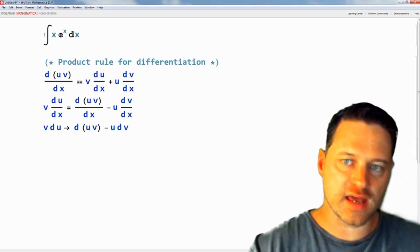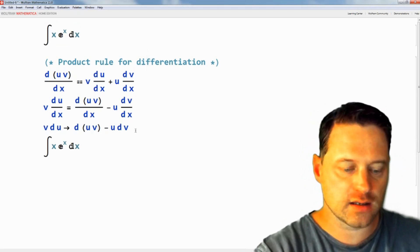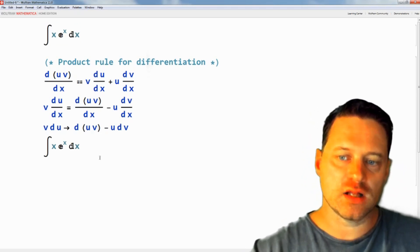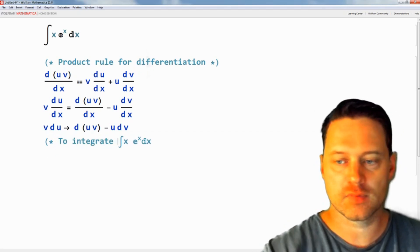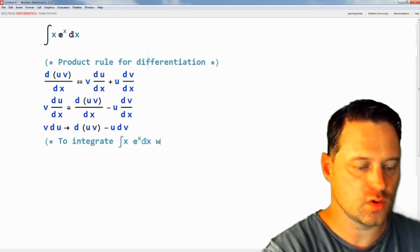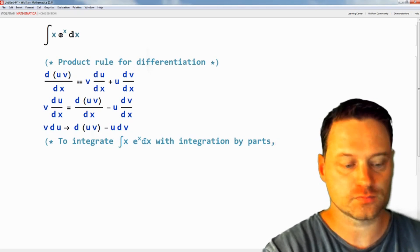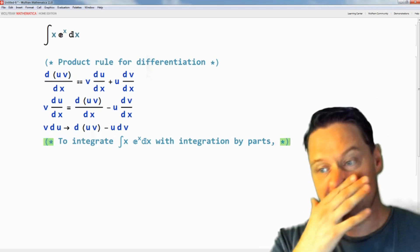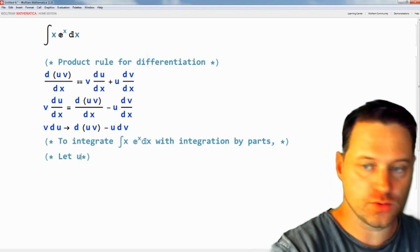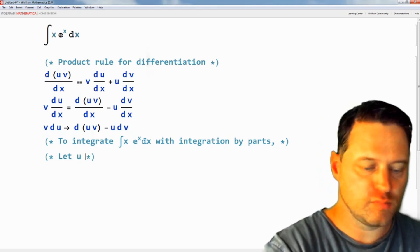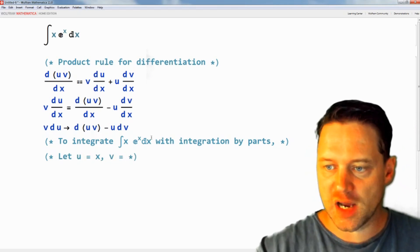So let's have a look at how that works in this exact integral. We'll copy this and write in a comment: to integrate this with integration by parts, we let u be equal to x and v be equal to e to the power of x.